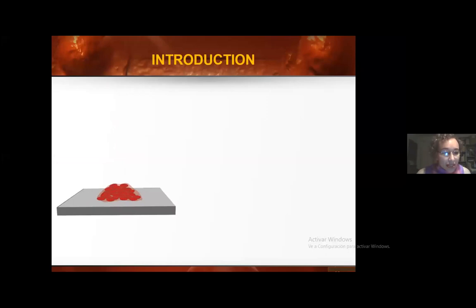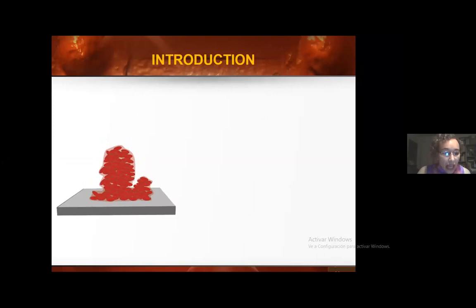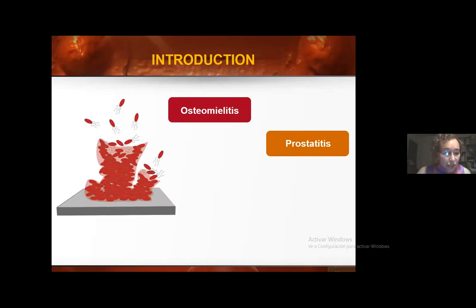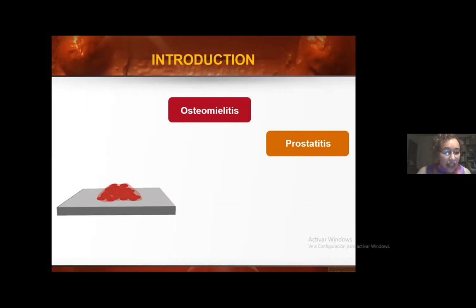Biofilms are complex microbial communities where microorganisms secrete a protective matrix that allows adhesion to abiotic or biotic surfaces. Biofilms are dynamic, heterogeneous communities that are continually changing. They can consist of a single bacterial or fungal species, or more commonly they can be polymicrobial — that is, they contain many different species at the most basic level.